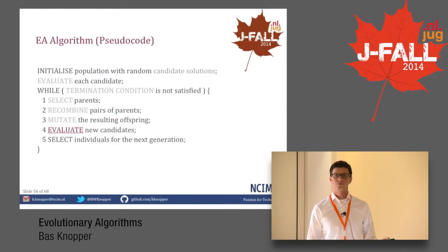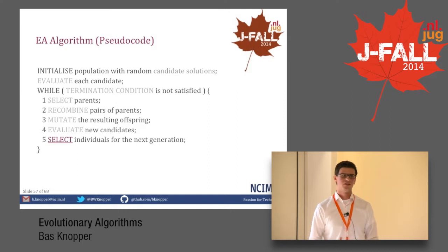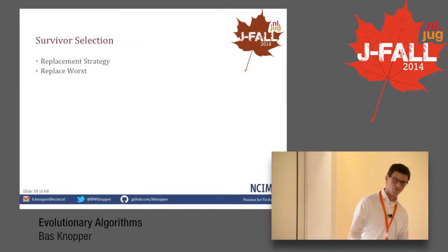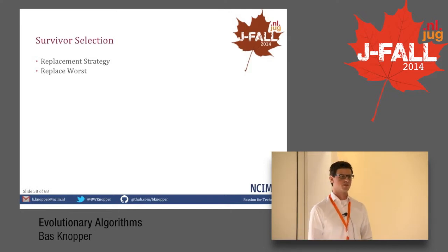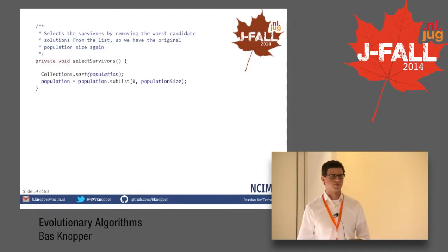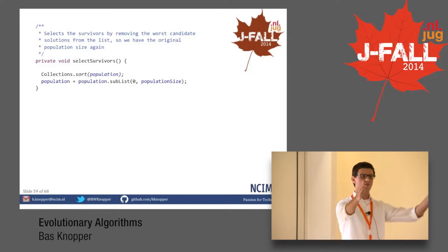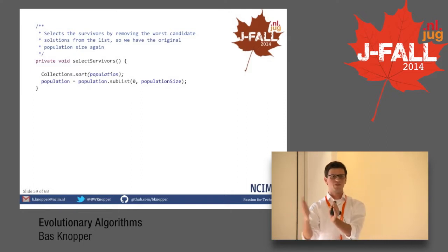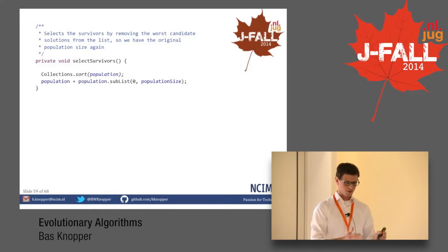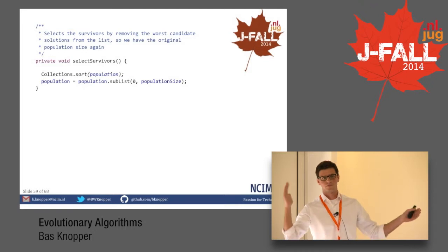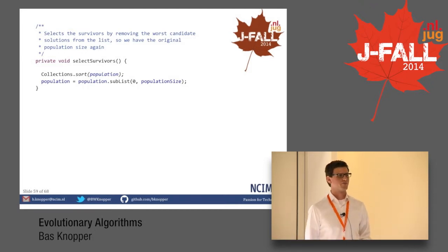We evaluate the new candidates — we already know how to do that. Now we select individuals for the next generation. There are a lot of theories, but to take a shortcut we're going to use a replacement strategy: replace the worst. We have the collection, we sort with the comparator, and sublist the population back to population size. We had 100, added 10 new offspring making 110, sort it, cut off at 100. We're ready for the next round.